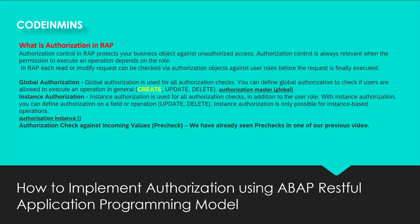Authorizations in RAP can be defined in different ways. The first is global authorization — this covers all authorization checks at a global level. At a high level, global authorization applies to create, update, and delete on a business object. If you want to restrict any user for these operations, you should use global authorization, which is defined in the behavior definition using 'authorization master' with the global keyword.